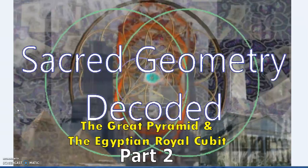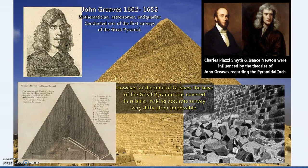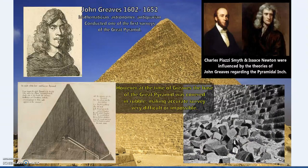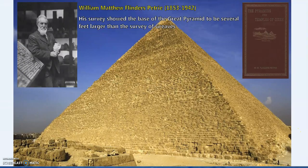Welcome to part two of the series: the Great Pyramid and the Egyptian royal cubit. In part one we discussed John Greaves and some earlier ideas regarding the pyramid and measurement systems, which were essentially thrown away as the rubble was removed and more accurate surveys became available. Matthew Flinders Petrie, in many ways the father of modern Egyptology, led surveys showing that Greaves' earlier work was not quite accurate regarding the base of the pyramid.